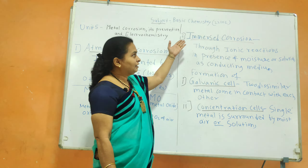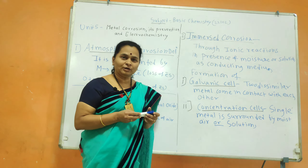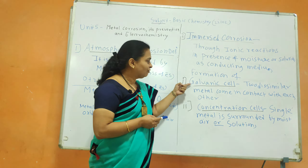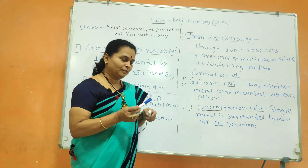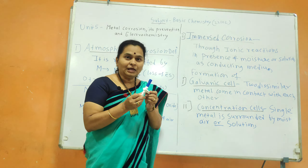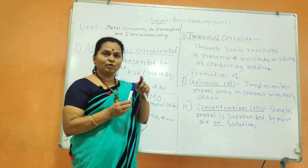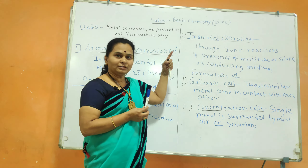The second type of corrosion is immersion corrosion, also known as electrochemical corrosion or wet corrosion. It is brought about through ionic reaction in the presence of moisture or a solution which acts as a conducting medium. There are two types: it is formed due to formation of a galvanic cell, where two dissimilar metals come in contact with each other surrounded by moist medium, and formation of a concentration cell, where a single metal is surrounded by moist air or medium.